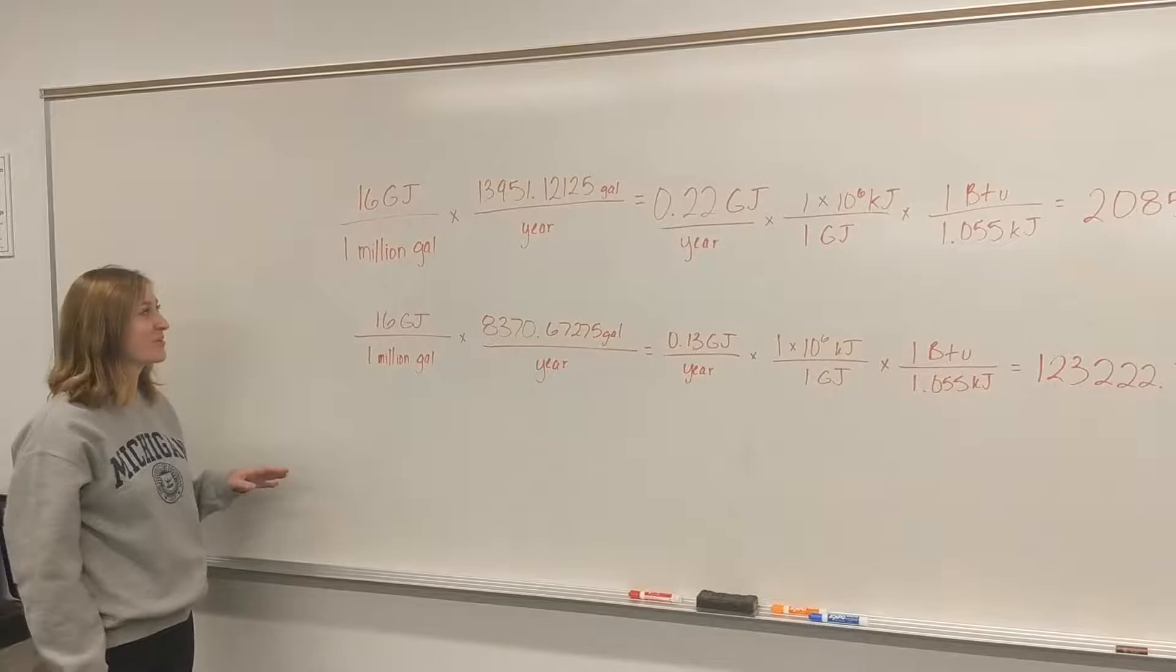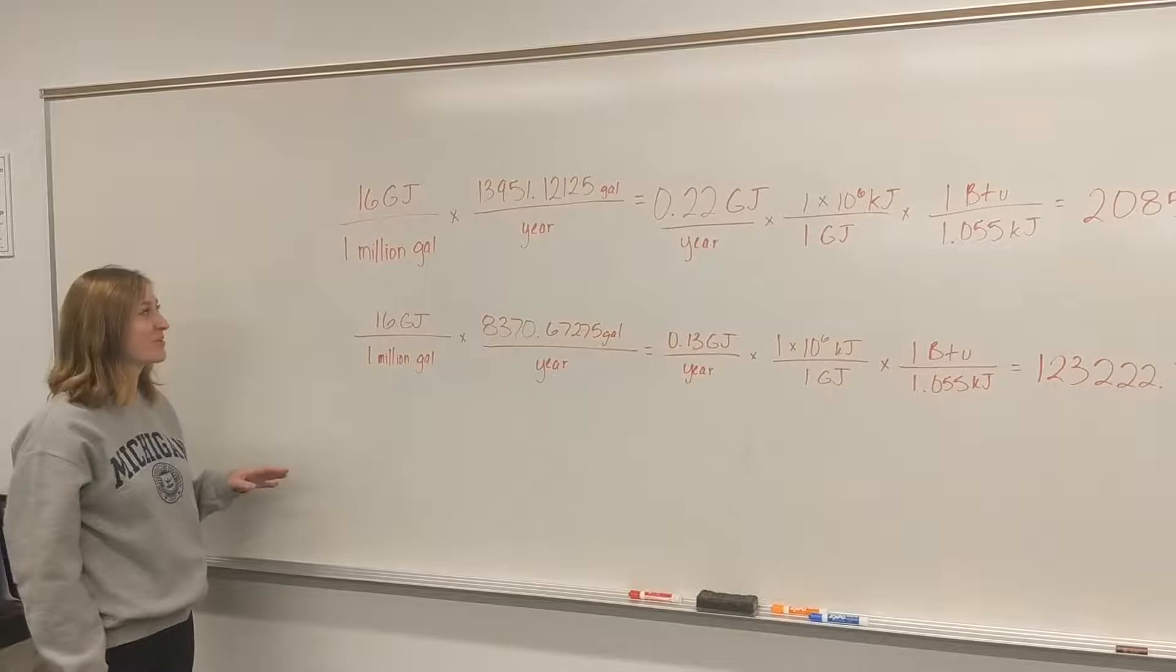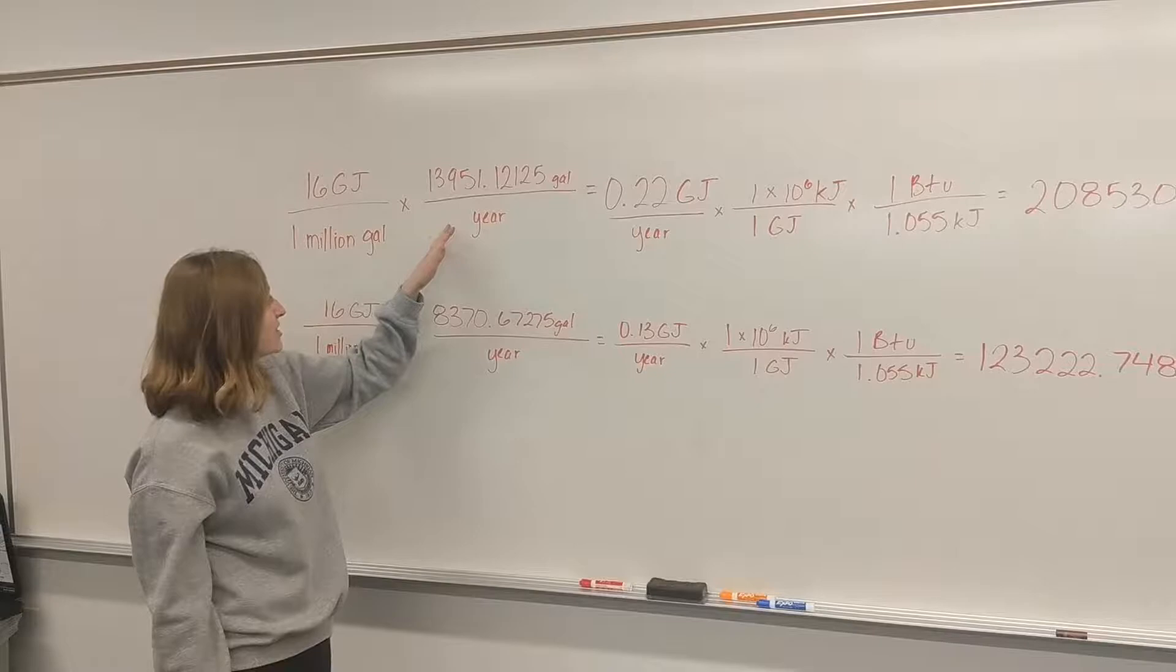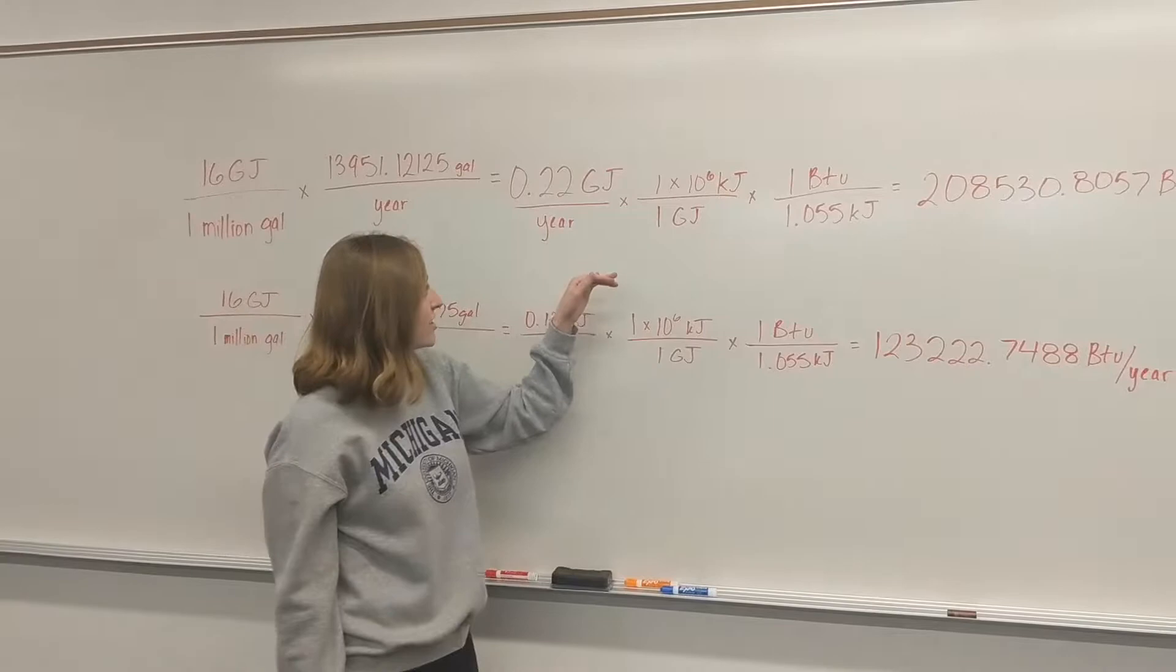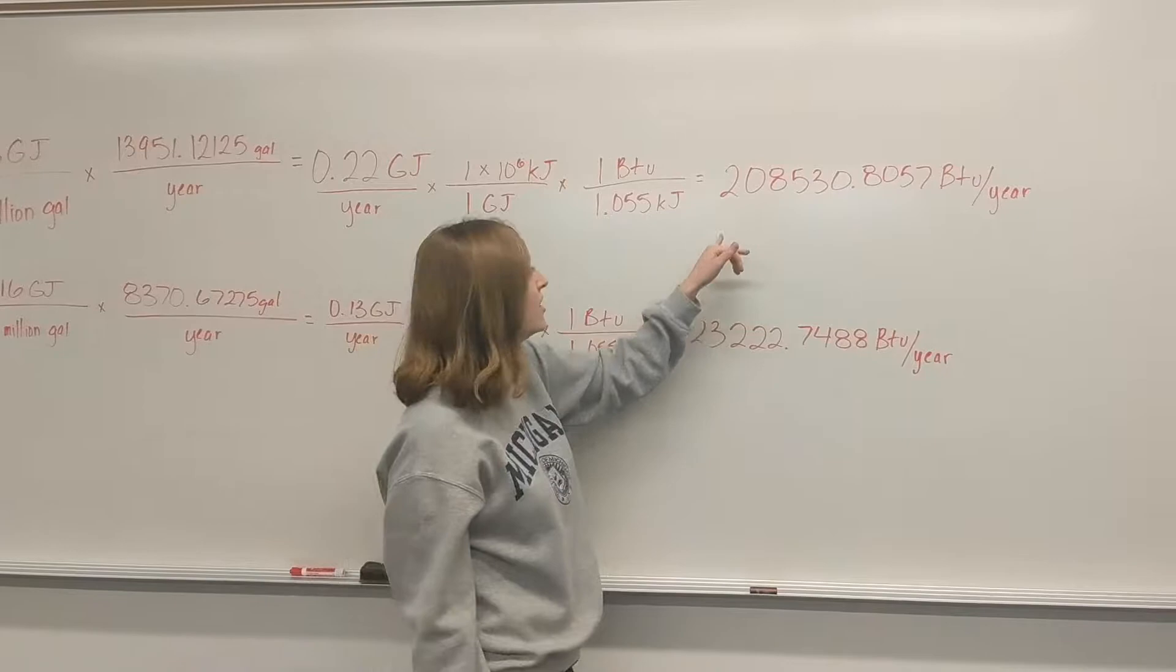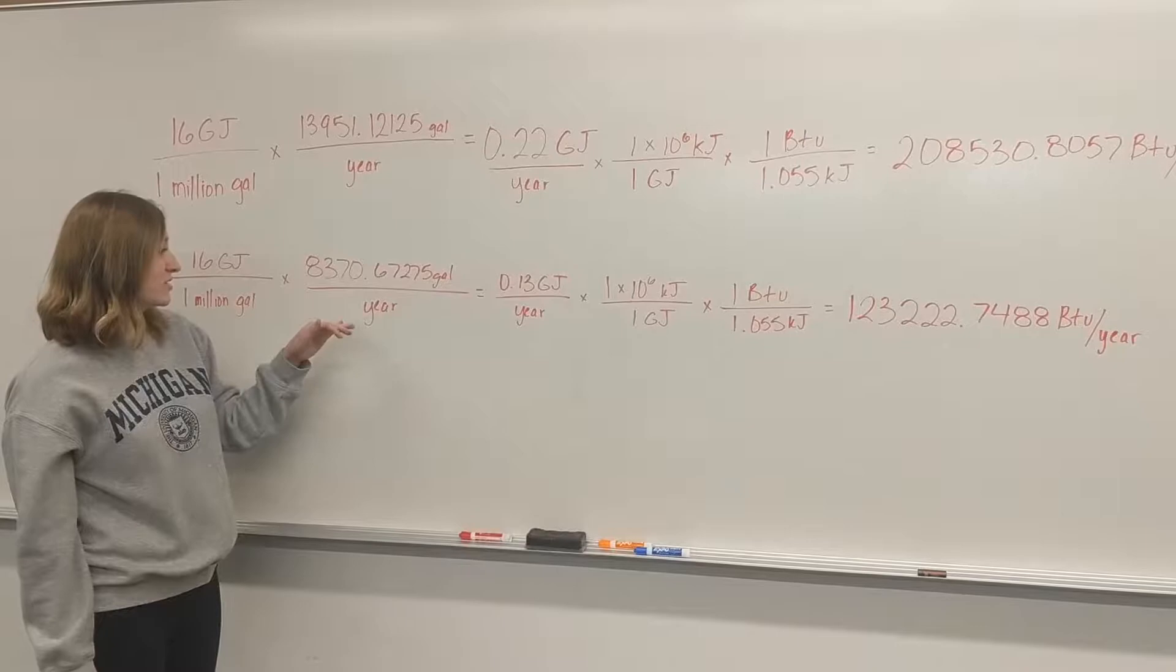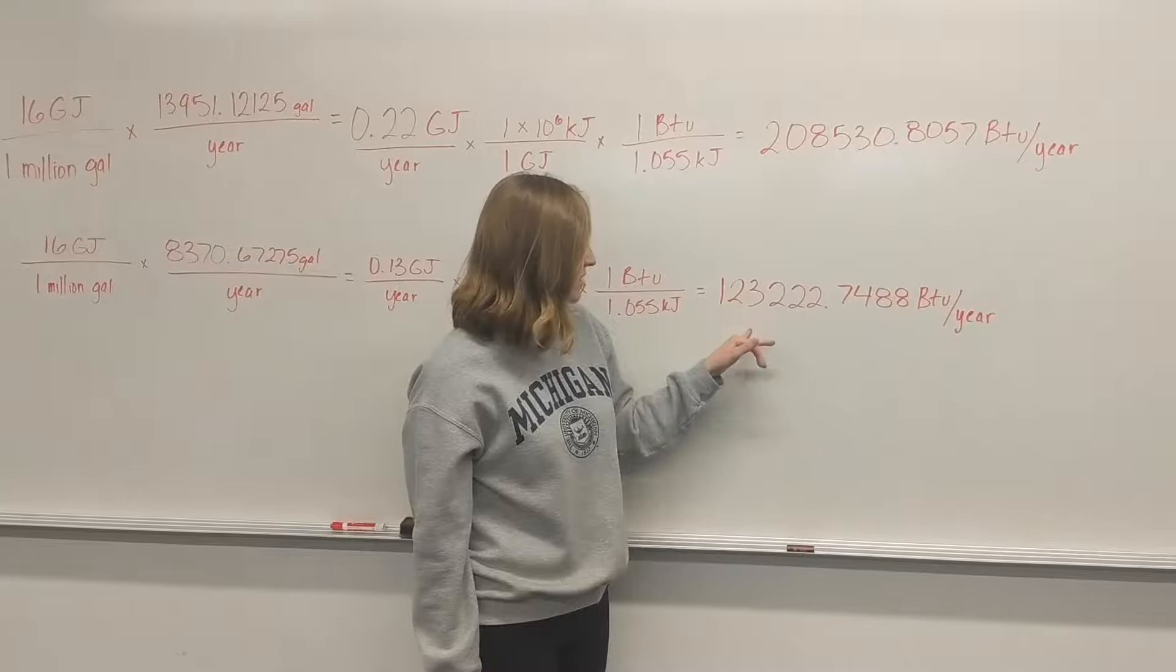Now we're going to look at the downstream costs in terms of energy. So the Ann Arbor wastewater treatment plant needs 16 gigajoules for a million gallons treated, and we said that for a standard shower head, a student would use just about 14,000 gallons per year, and that is equal to 0.22 gigajoules per year. Converting that from gigajoules to kilojoules, and then from kilojoules to BTU, we see that one student will need just over 208,000 BTUs per year. For the energy efficient shower head, the calculations are exactly the same, except we said that a student would use 8,370 gallons per year. Converting that one more time, we see that a student will need 123,222 BTUs per year.